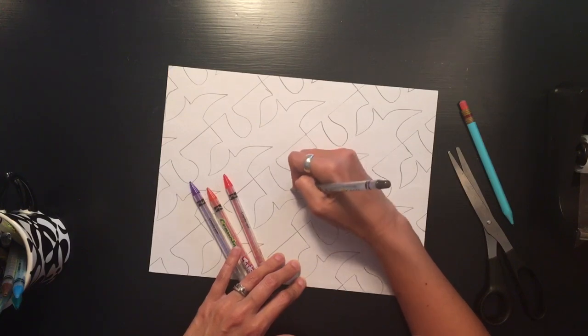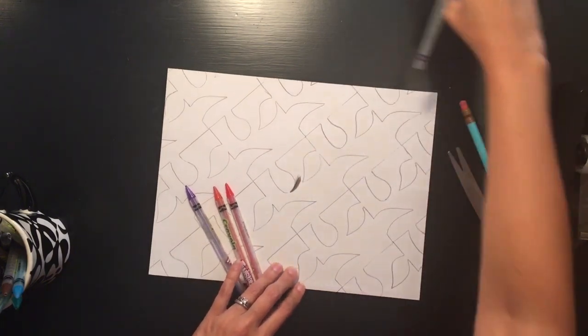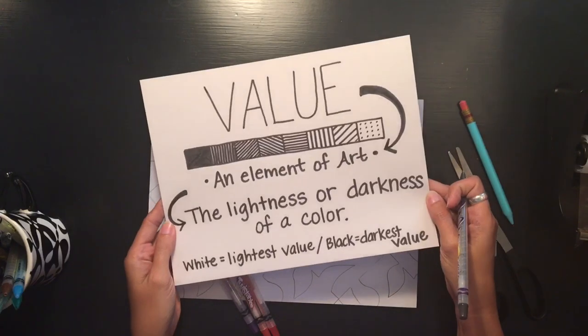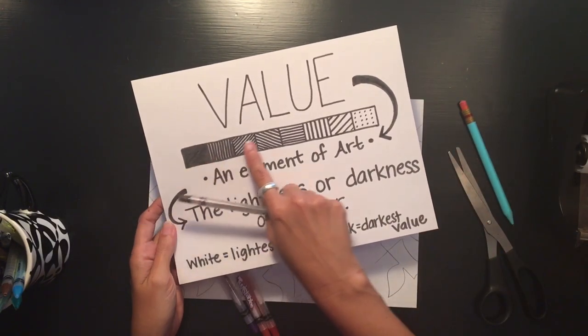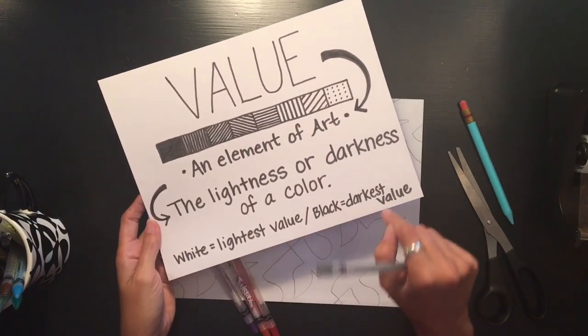So I'm going to start out with my darkest value of black. And if you're not familiar with value, value is an element of art that simply deals with the lightness or darkness of a color. So we see here this is our darkest value and it goes lighter. So white is the lightest value and black is the darkest value.